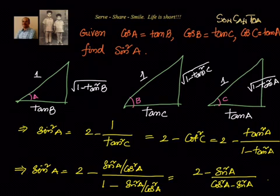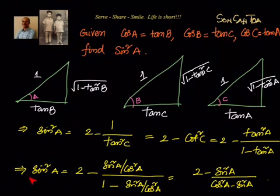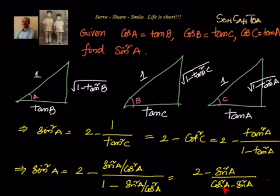Simplifying the denominators: the cos²A terms cancel when we take LCM, giving sin²A equals (2 minus sin²A) divided by (cos²A minus sin²A). Since everything on the LHS is sin²A, we can write cos²A as 1 minus sin²A.